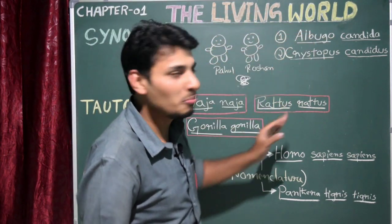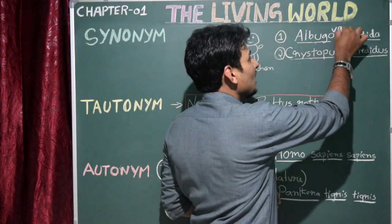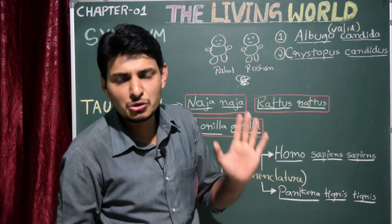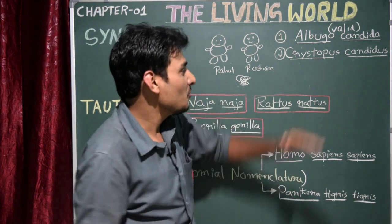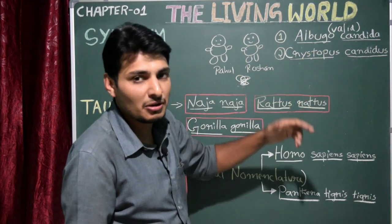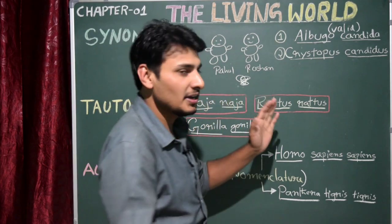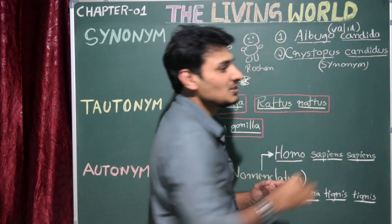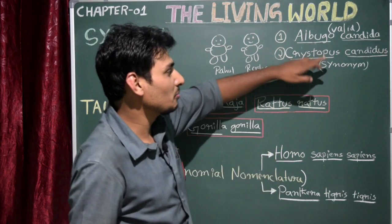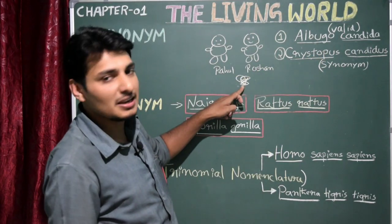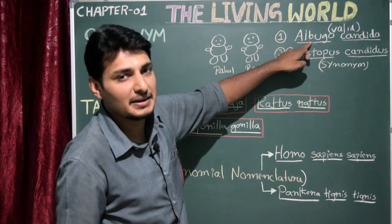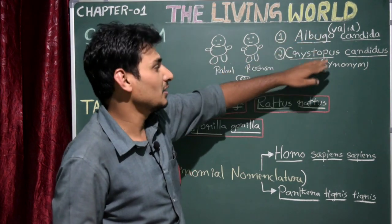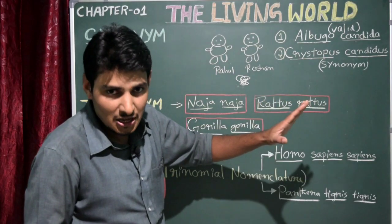The first name given by Rahul is considered the valid name. Always remember: if an organism has two scientific names, the first name given to the organism will be considered the valid name. Whereas Christopos candida — the second name given after three years — will be considered the synonym. Synonym here means a similar or same name. The first name, Albigo candida, is given priority.